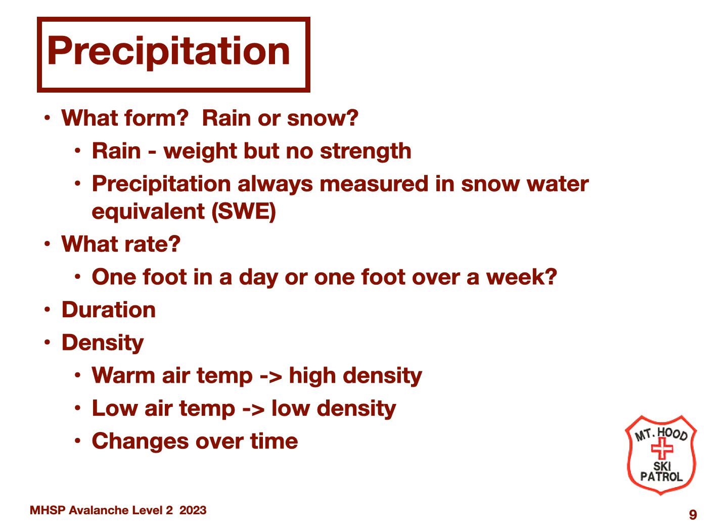Duration goes hand in hand with rate — how long has the snow been coming down? Density is also important because dense snow, typical of Mount Hood for example, has a higher water content and adds more weight to the snowpack. Temperature has a large impact on density: warm air temperature results in higher density snow, while low air temperature results in lower density snow. And since temperature fluctuates, so will the density.